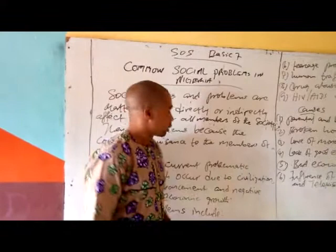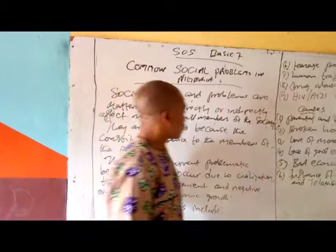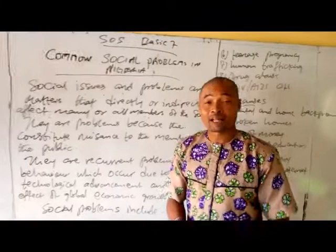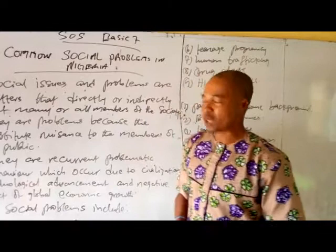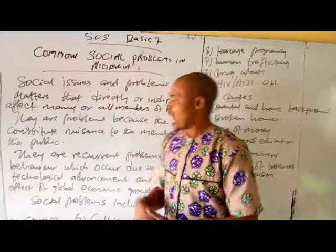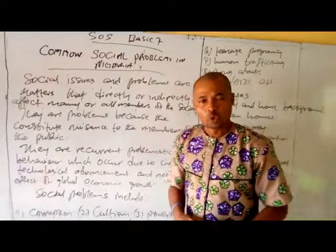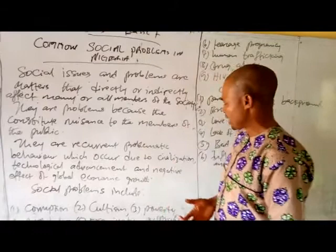Today we shall be looking at common social problems in Nigeria. Social problems or issues are matters that directly or indirectly affect many or all members of the society. They are problems because they cause some nuisance in the society, and also they are recurring problematic behavior which occur due to civilization, technological advancement, and negative effects of global economy.